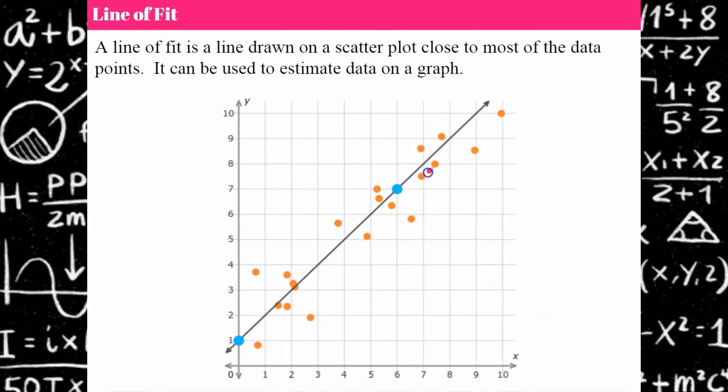So all of these orange points are data points that were collected in the data, and these blue points are just points on the line. They're not part of the data and I did this on purpose. They pass through specific ordered pairs on the coordinate plane so I'm going to use those to write the equation of my line even though they're not my data points.